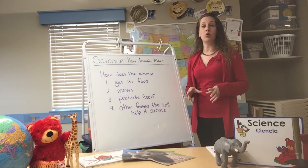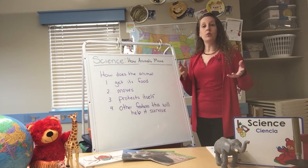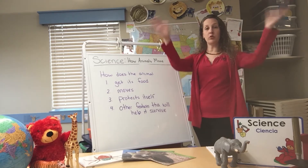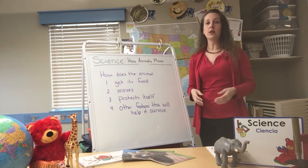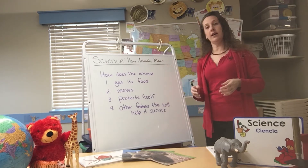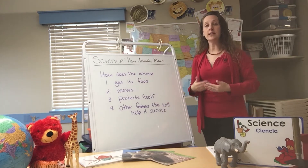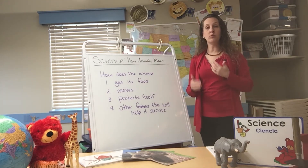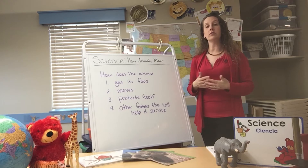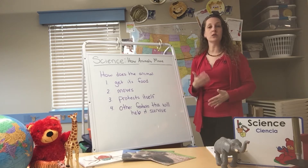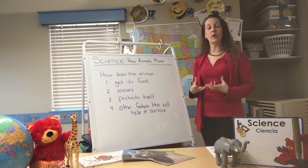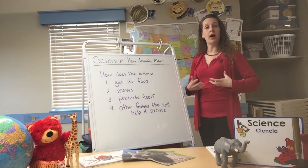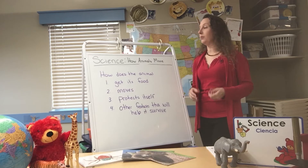All animals move. We as humans move — we move our hands, our feet, our head. If we need to get somewhere fast, we run. If we don't need to get somewhere fast, we can walk. We move in different ways: we can jump, hop, skip.